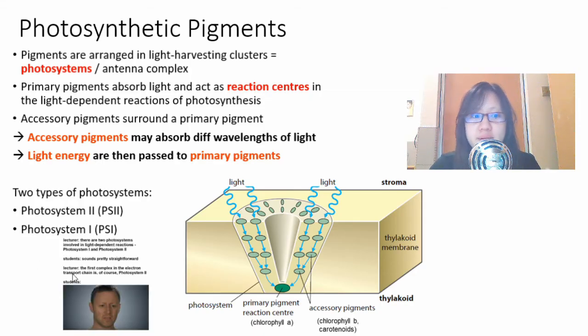We'll learn about the process that occurs here in more detail in the next video. In general, these pigments line up as photosystems and there are two types of photosystems: photosystem 2 and photosystem 1. This sounds pretty straightforward but the first complex in the electron transport chain is photosystem 2. The reason being photosystem 1 was discovered first and then later they discovered photosystem 2. So the names stuck but in the electron transport chain photosystem 2 comes first.